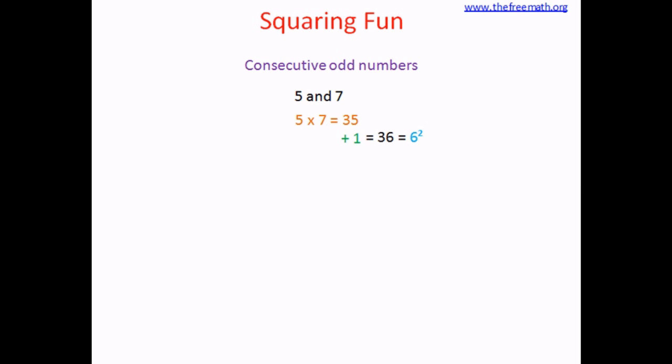So it works here also. 6 is in between 5 and 7. Similarly if you consider 9 and 11, the product of 9 and 11 is 99. You add 1 to it so you get 100 and 100 is the square of number 10.